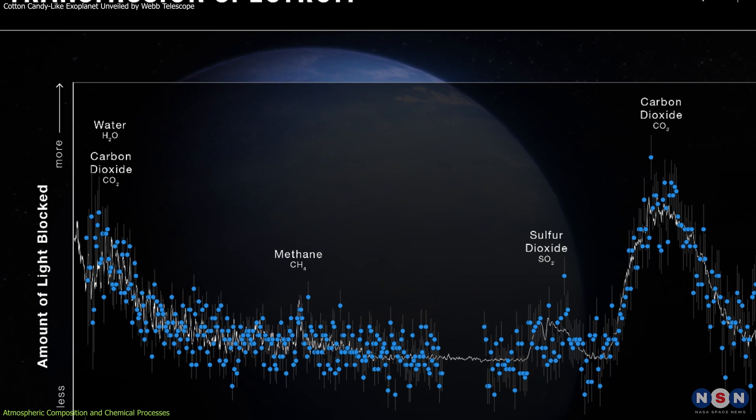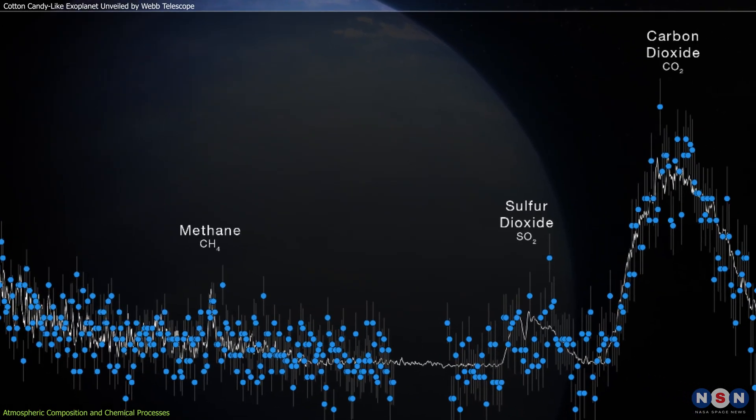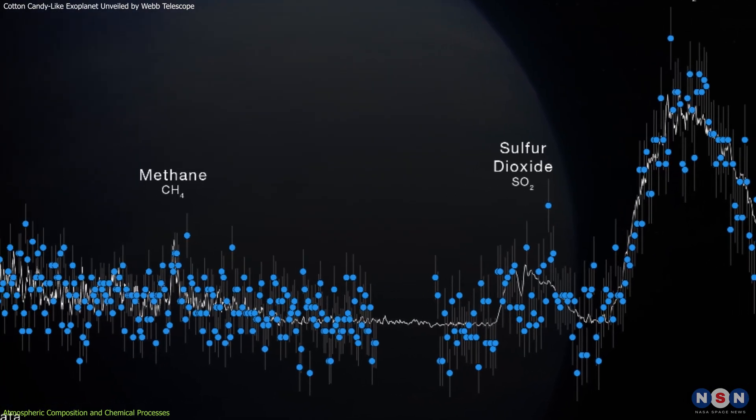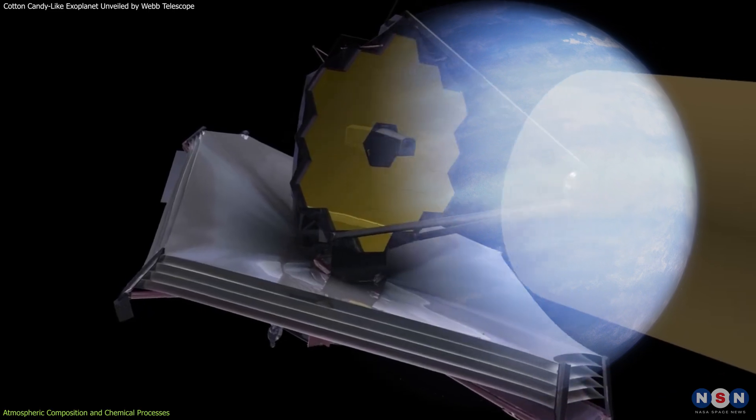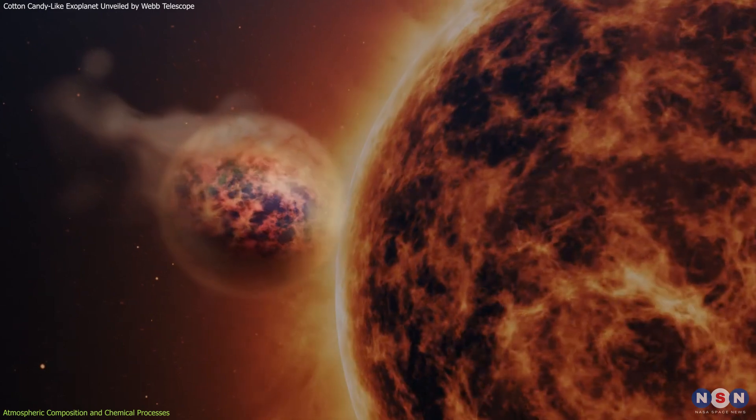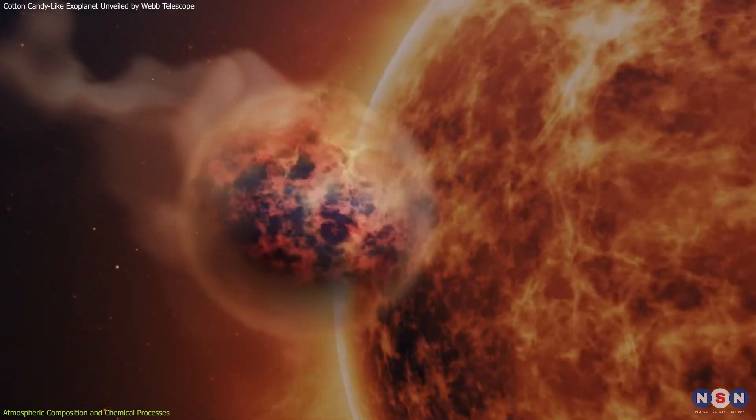This includes the photodissociation of water vapor and subsequent reactions that could explain the formation of sulfur dioxide and the absence of methane. The spectroscopic data from Webb, which allows scientists to determine the composition of the atmosphere by studying how different chemicals absorb light, has provided unprecedented clarity.